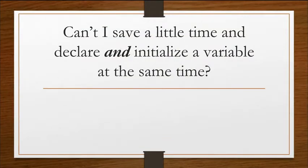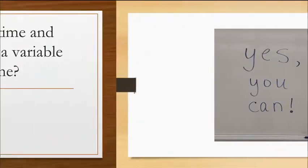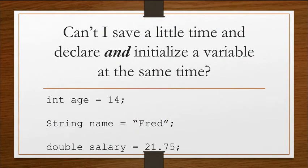Can't I save a little time and declare and initialize a variable at the same time? Well, yes, yes you can. So here's some examples of statements that are both declarations and initializations. So int age equals 14, string name equals Fred, double salary equals 21.75. And this is typically how you will write your statements.